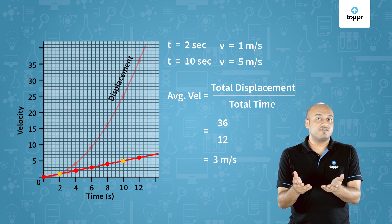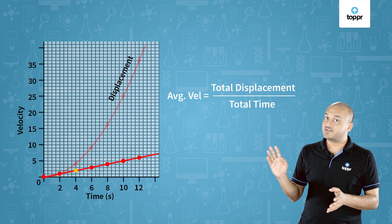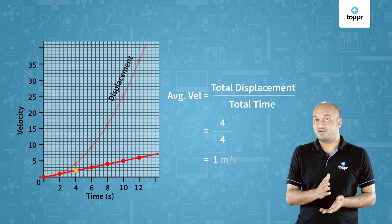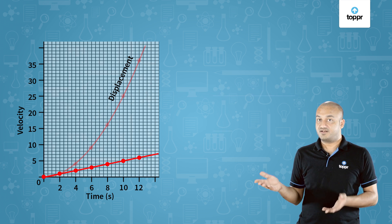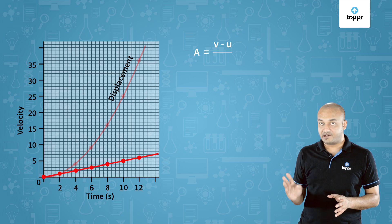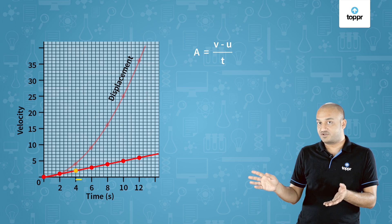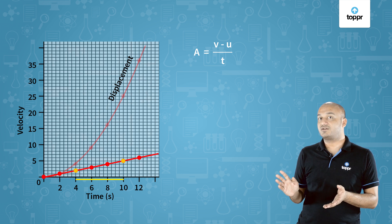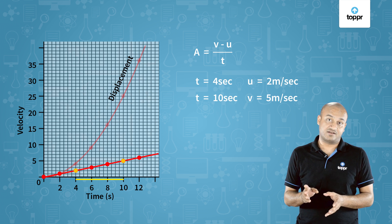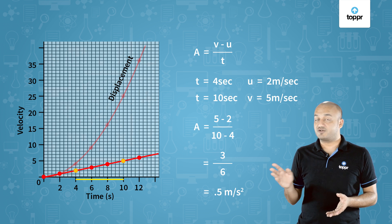Average velocity will be different for different time intervals. For example, for the first 4 seconds of the journey, the total displacement was 4 meters, so the average velocity is 1 meter per second. Now let's find the value of acceleration. The formula for acceleration is (v − u) / t — final velocity minus initial velocity divided by the time taken. Picking from t = 4 seconds to t = 10 seconds: velocity at 4 seconds was 2 m/s and at 10 seconds is 5 m/s. The acceleration comes out to be 3 / 6 = 0.5 meters per second squared.